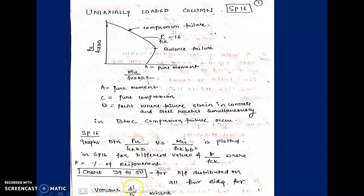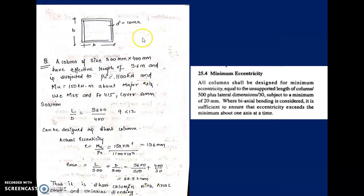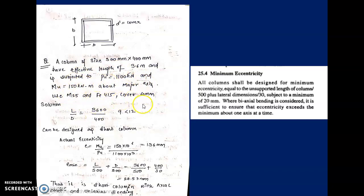For various values of d'/D — where d' is the cover and D is the lateral dimension — different charts are used. Let us solve one question to understand how to use the chart. A column of size 300×400 mm has effective length 3.6 meters and is subjected to a load of 1100 kN with a moment of 150 kN·m about the major axis. fck = M25, fy = 415, cover = 60 mm (so d' = 60 mm).